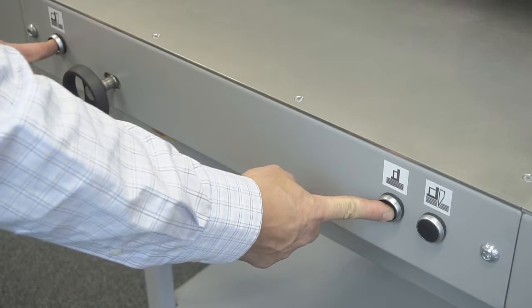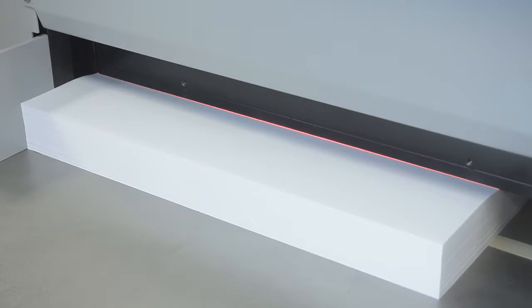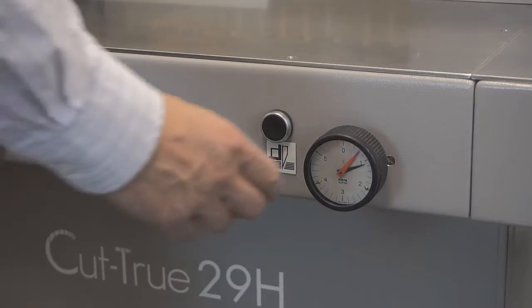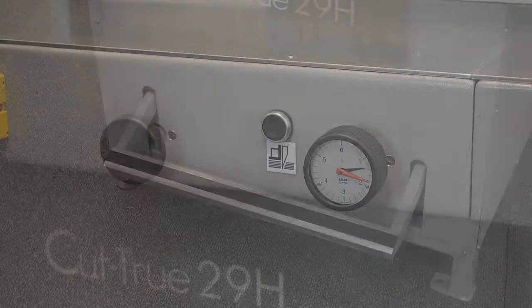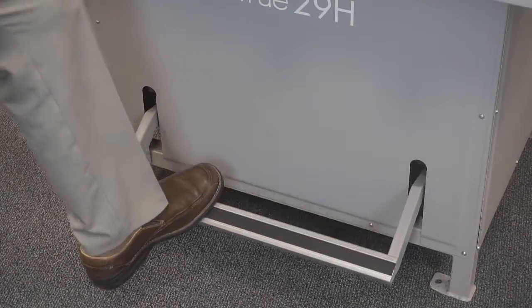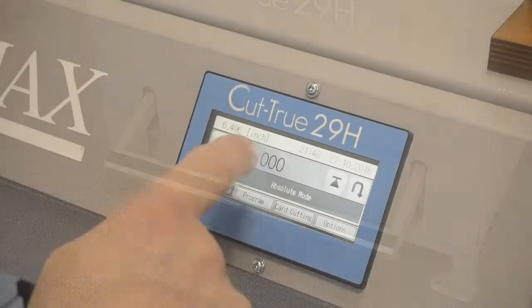The Cut-True 29A utilizes an electronic mechanism to securely clamp the paper stack. The Cut-True 29H uses hydraulic pressure which can be adjusted to provide the best clamp possible for different paper weights and stack heights. It also features a foot pedal pre-clamp to check the paper position prior to cutting.